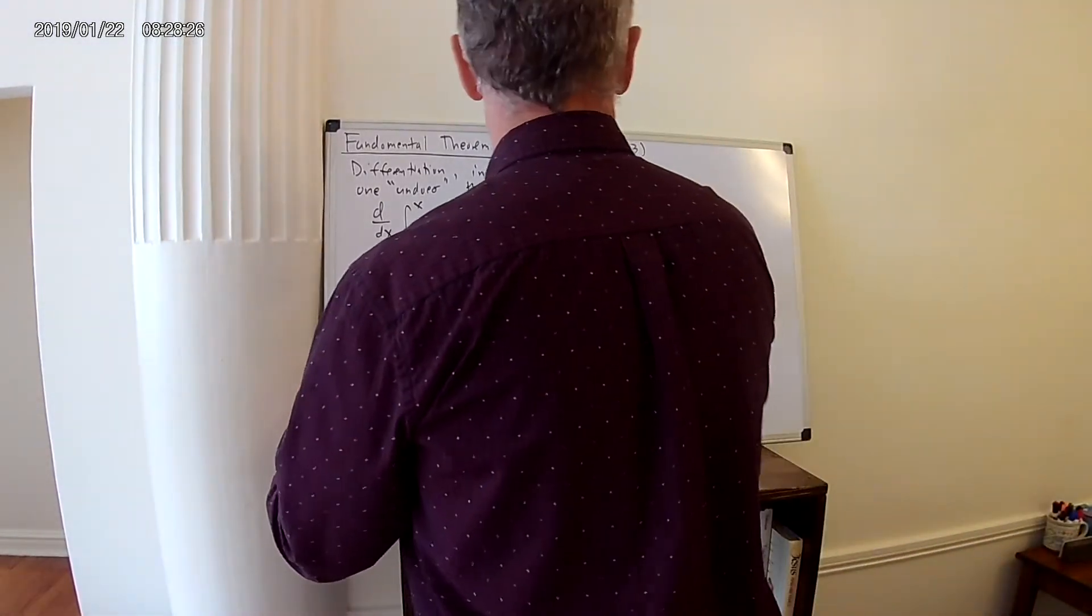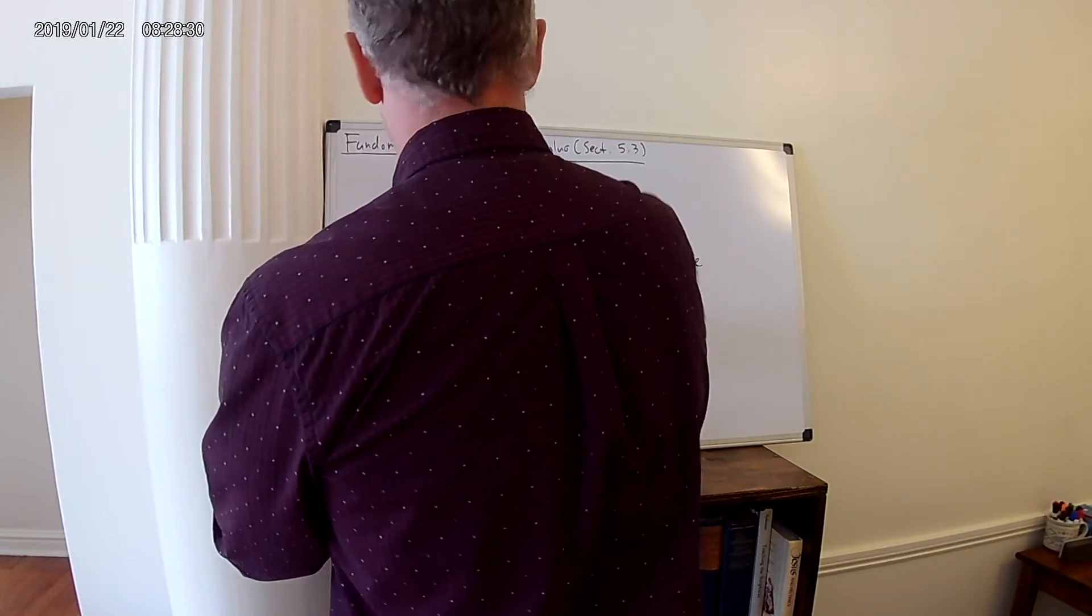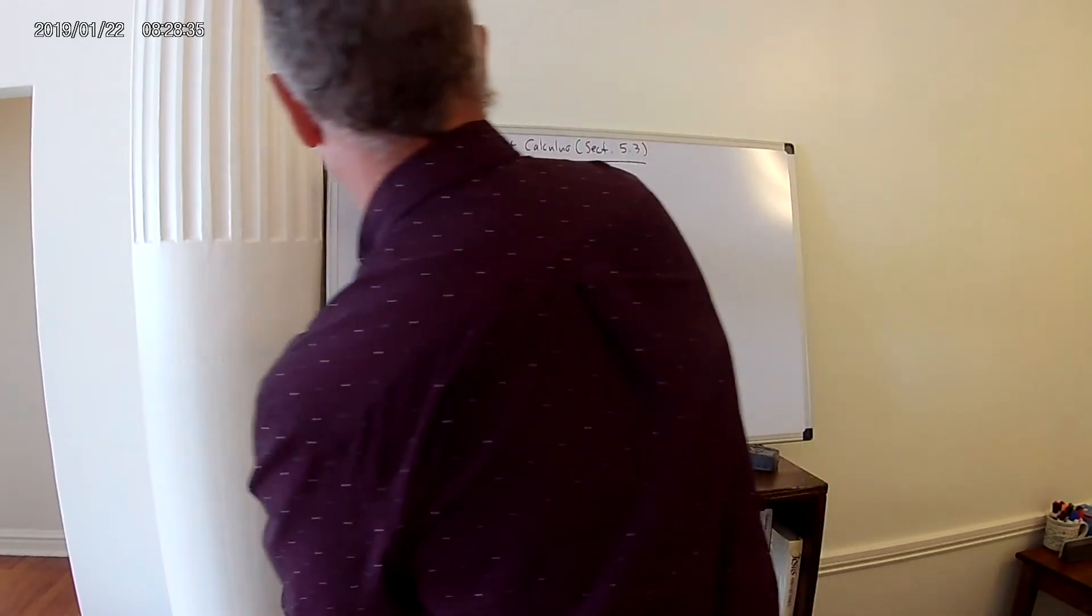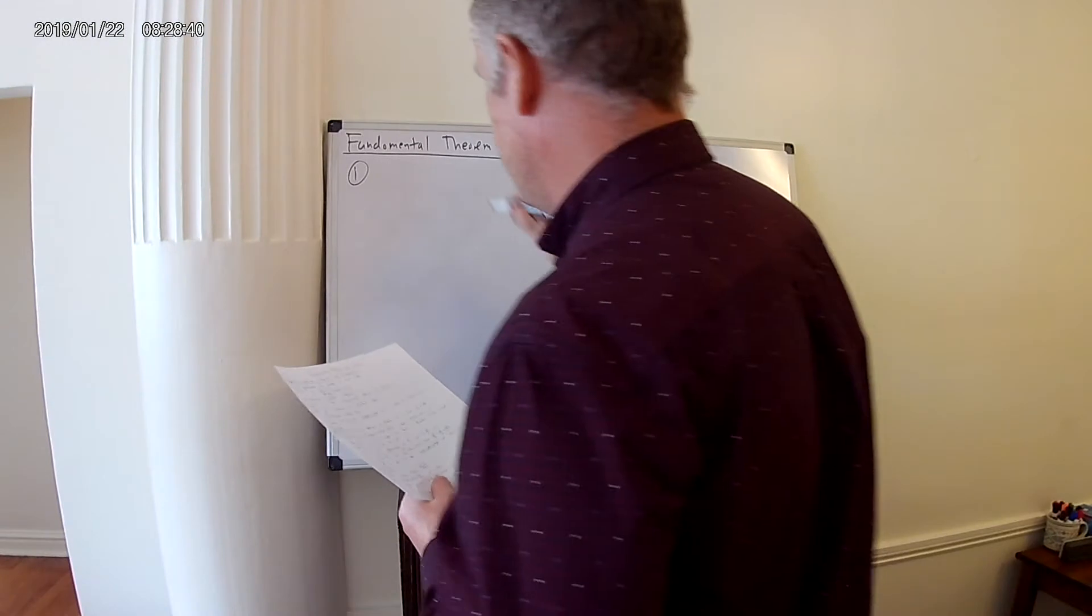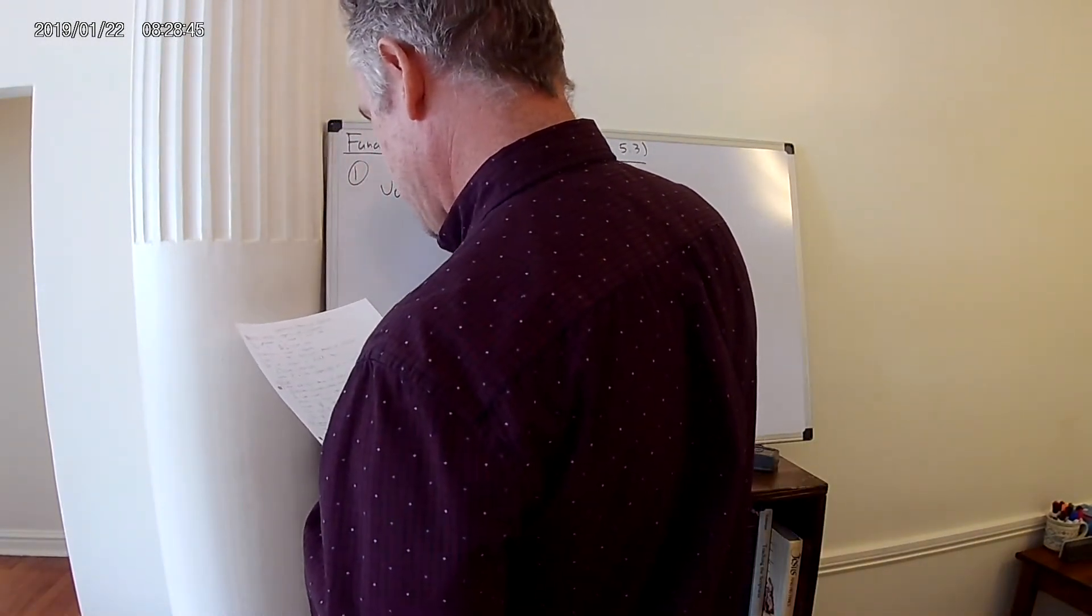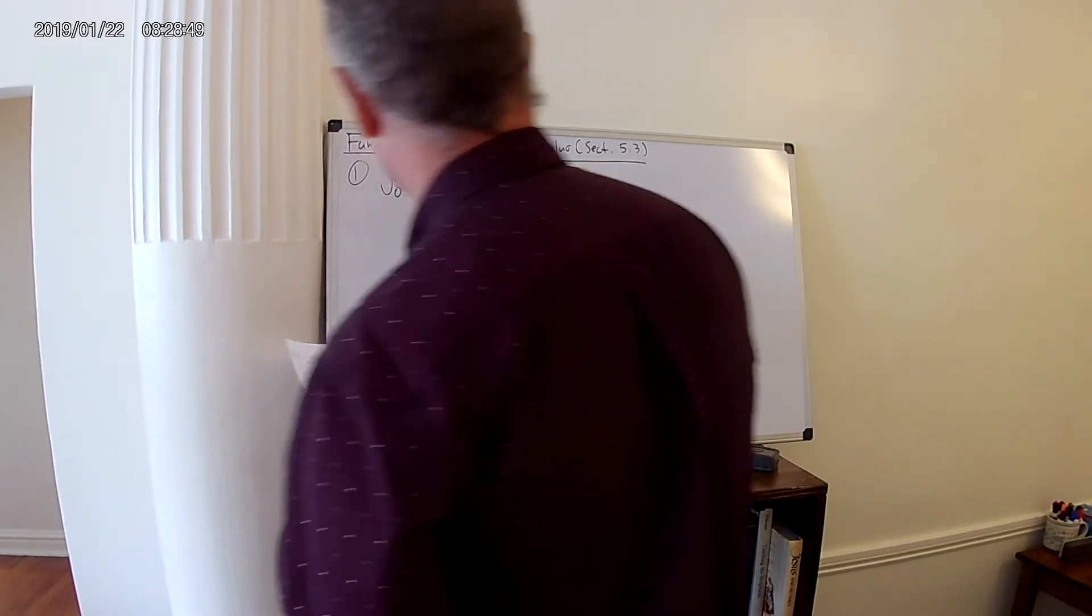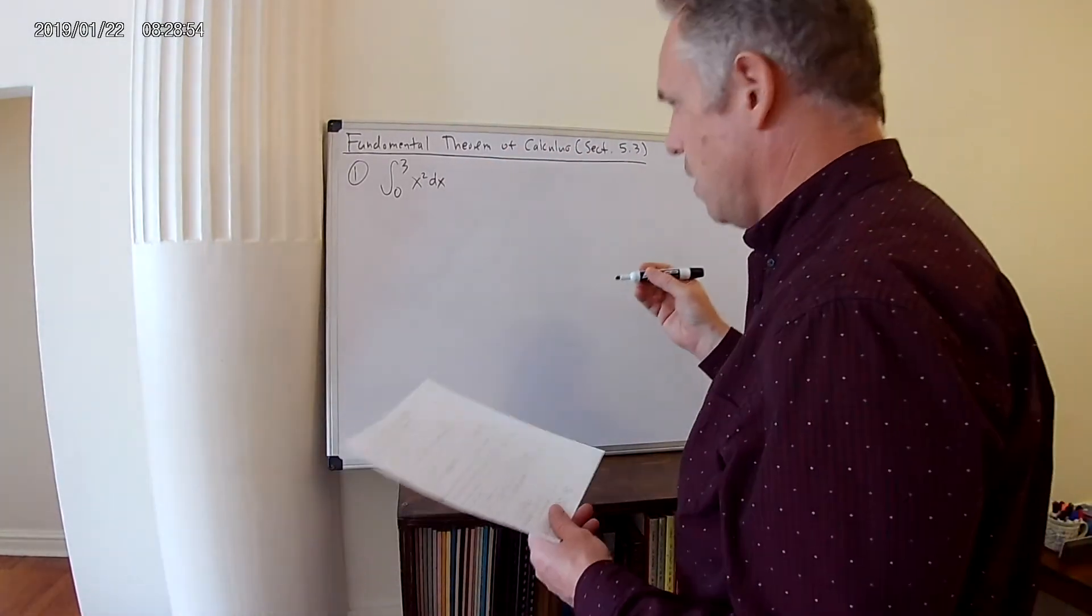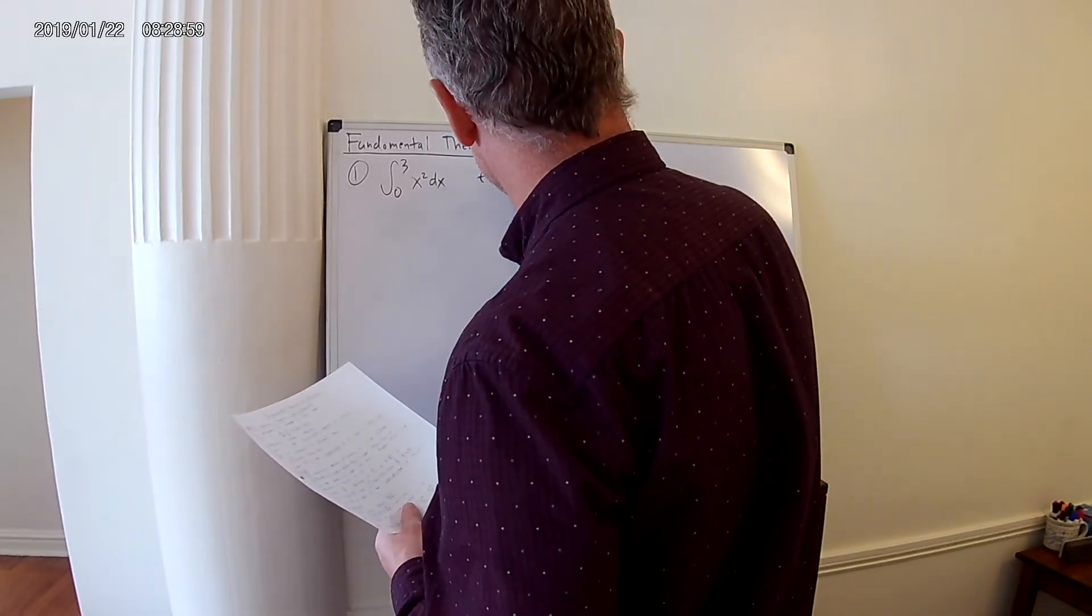So let's consider some examples. I'll do one example in this video, and then three more in the next one. The first example is, let's say we want to find the area under this curve. So we want to find 0 to 3 of f(x), where in this case, f(x) is x squared. So this means that my small f(x) is x squared.